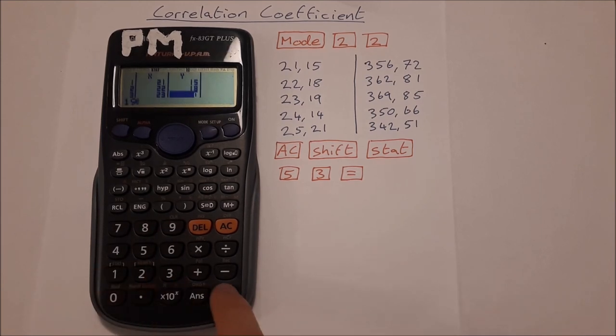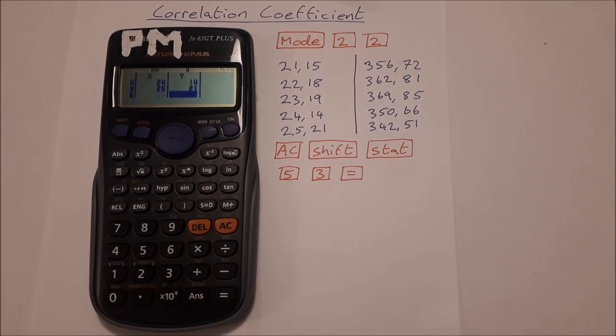Once we have all our data in, we press AC. Now that'll clear the screen of the calculator but your numbers, your data, is still stored in the memory so don't worry about that.